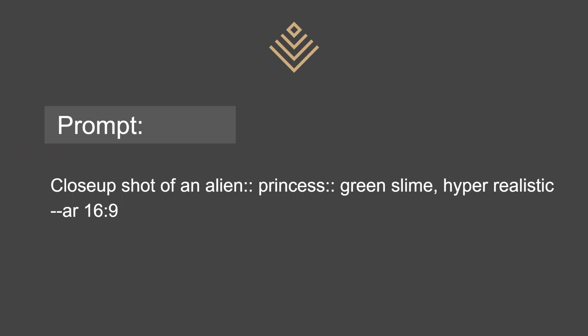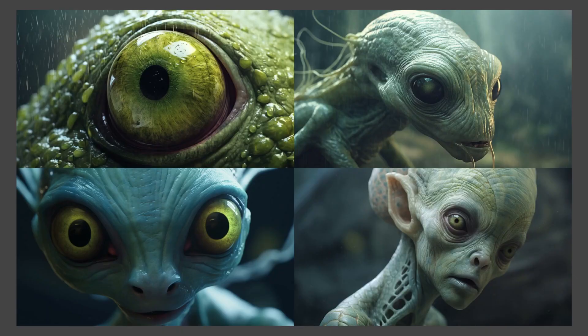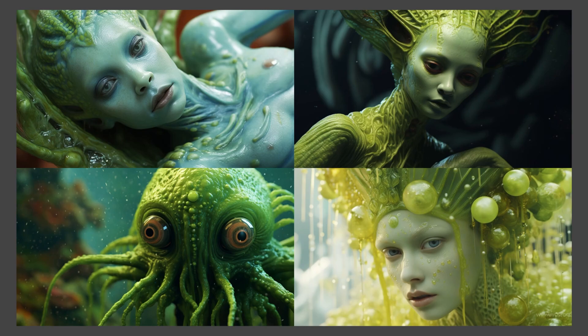Now, what happens when I add two double colons? In this case, after the word 'alien' and after the word 'princess' — here's what happens. I am simply observing, and if I'm looking for something specific, these are techniques I can use to guide the prompt a bit more. If I wanted it to be more alien-like, I could use the double colon after 'alien', and even after 'princess' as well, since it still affects the alien part while having double colons on both.